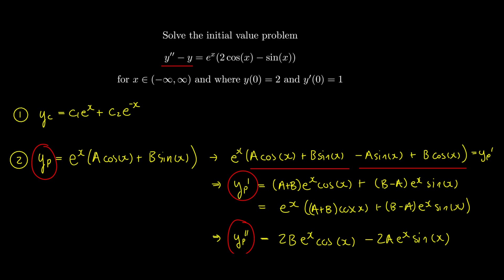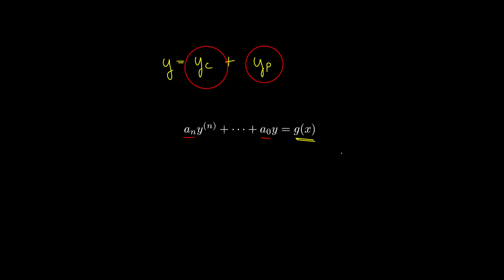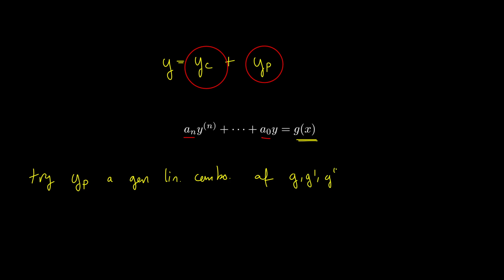That illustrates the technique of undetermined coefficients. In general, whenever you're given the forcing function g, the key step is to represent yp as a general linear combination of g and its derivatives — meaning any linear combination will be of the form you try — and then determine the coefficients by substituting back into the equation.